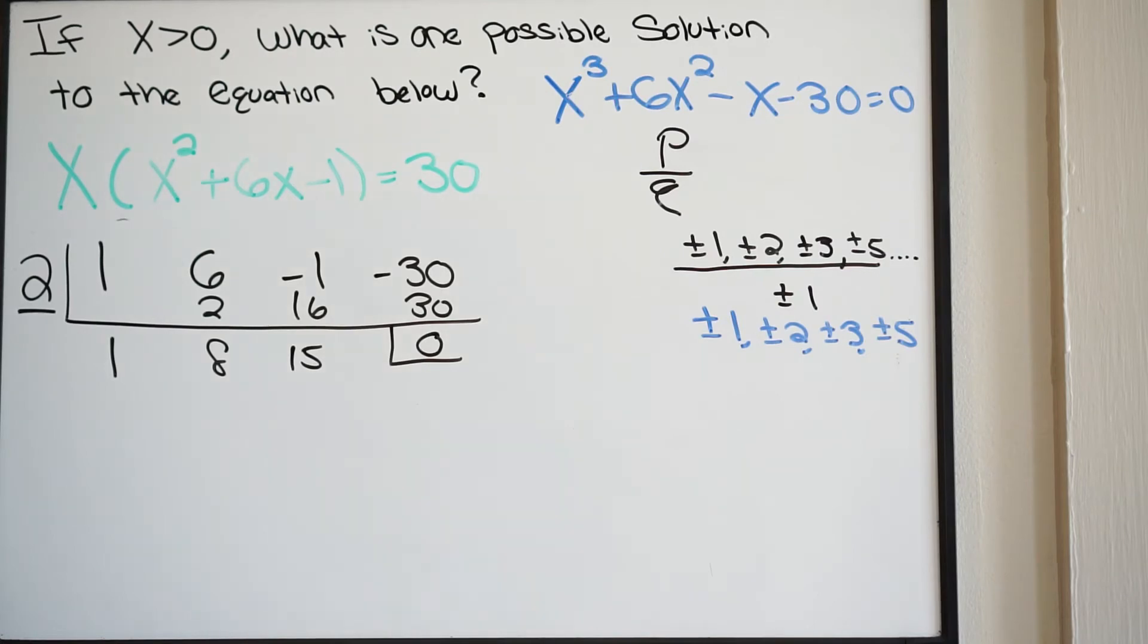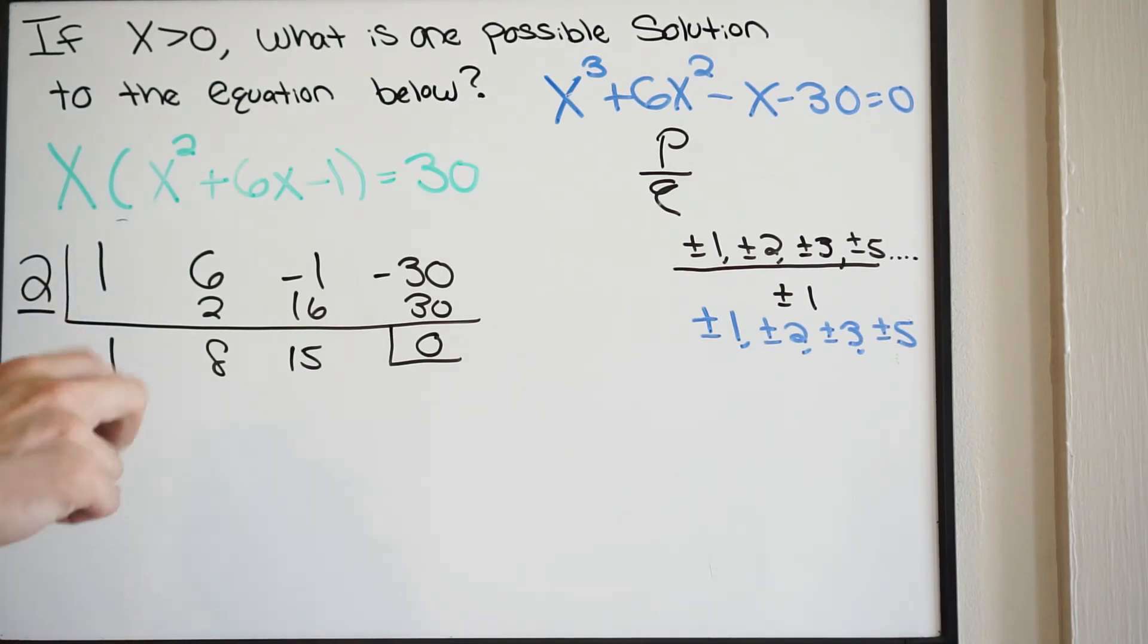Notice here, you could actually stop right here because it says if x is greater than 0, what is one possible solution to the equation below? Well, 2 would be a solution to that equation. But let's just go ahead and find all of the 0s here so we can see the whole thing. At this point, we know that we just brought this down to a quadratic because when we do synthetic division, we naturally go down a degree.